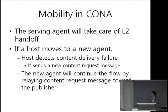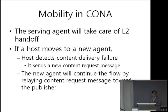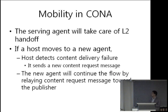For instance, if a host moves to a new agent due to mobility, the host detects a content delivery failure — either because data stops arriving or it detects a new IP address with a new agent. It then simply sends a new content request message, and the new agent relays the request to the publisher so content delivery continues to the host.